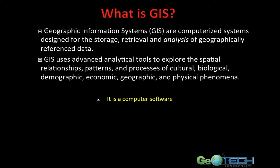GIS is a computer software. Google Earth, for example, can be considered a nice, simple GIS software package. When we explore further in this course, we'll explore ArcGIS, which is produced by a company called ESRI — Environmental Systems Research Institute. They're the number one producers of GIS software in the industry, but there are other software packages that we'll explore as well.